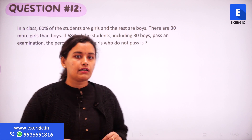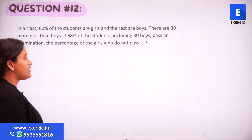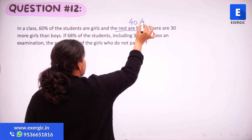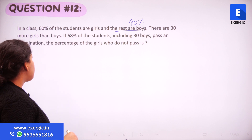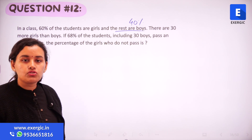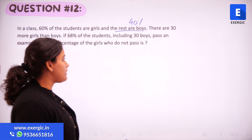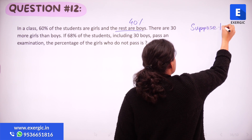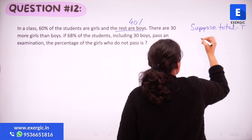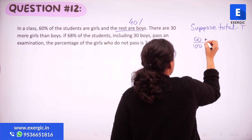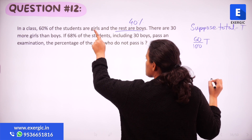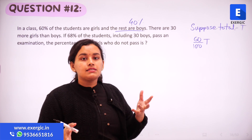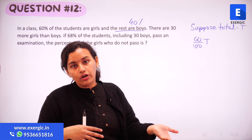In a class, 60% of the students are girls and the rest are boys, meaning 40% of the total are boys. There are 30 more girls than boys. These two statements alone will give us the number of girls and boys. Let the total number of students be t. So 60% of t are girls, and the difference between the number of girls and boys is 30.